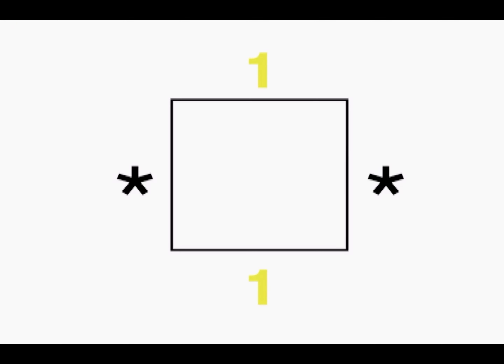In this second example, we'll play the number one yellow on the first beat, a rest on the second beat, one yellow on the third, and a rest again on the fourth beat.